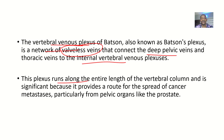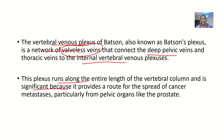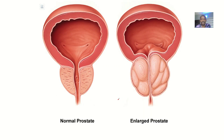This plexus runs along the entire length of the vertebral column, and it's significant because it provides a route for the spread of cancer metastasis. If cancer wants to spread, it just needs to get into one of the veins to reach all the others. This provides a route for metastasis, particularly for pelvic organs like the prostate.